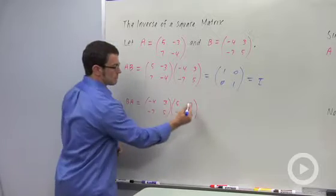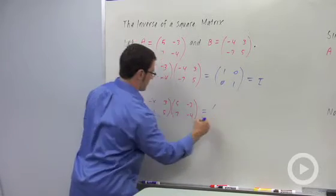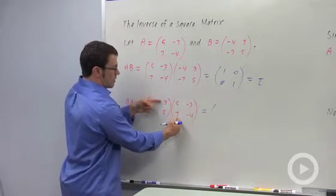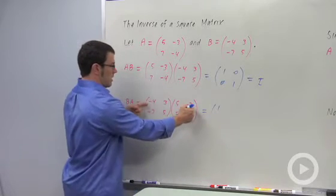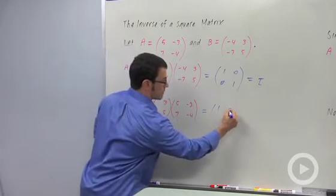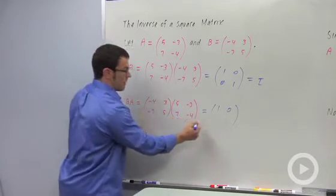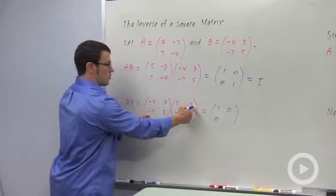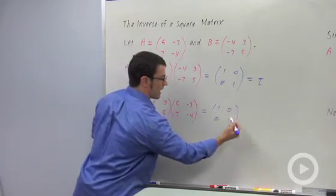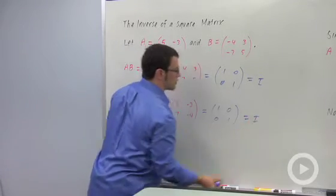Let's try B times A. I get -20 plus 21, which is 1. I get 12 minus 12, which is 0. I get -35 plus 35, which is 0. And I get 21 minus 20, which is 1. Again, I get the identity matrix, I.